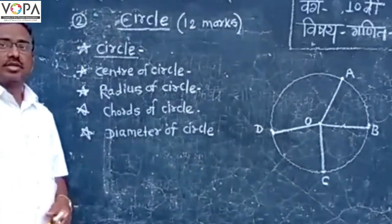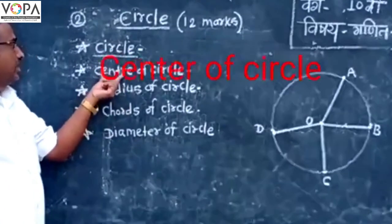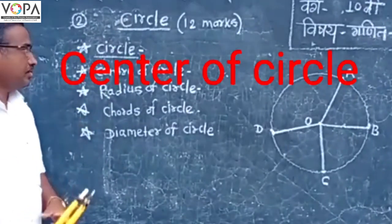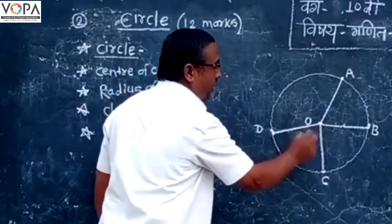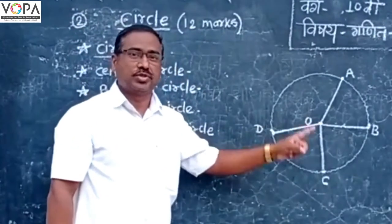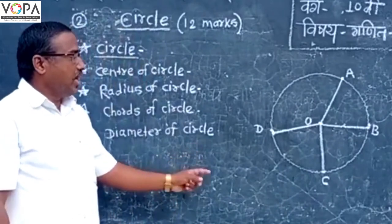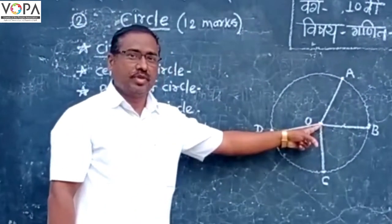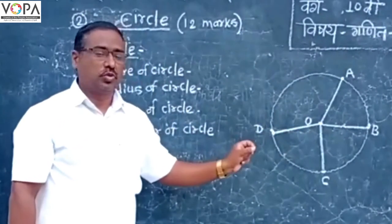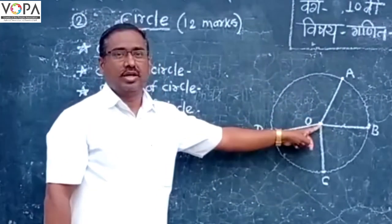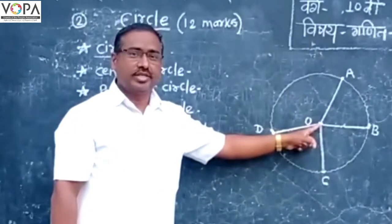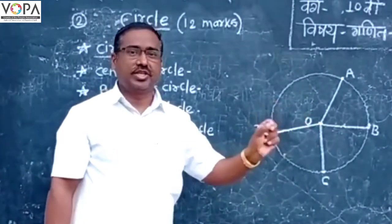The second term related to circle is the center of circle. In this figure, the fixed point O is said to be the center of the circle.